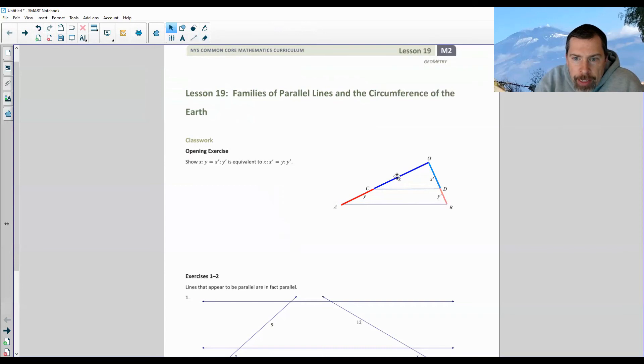So here's what we have for starters. We're trying to show that x is to y as x prime is to y prime, which is blue to red as blue to red, is equivalent to x is to x as y is to y, which would be blue to blue as red to red. Okay. So that's what we're trying to prove. We're trying to prove that it doesn't matter how we set up the proportion. So it says to show that these are equivalent. First thing we're going to do is write these proportions as fractions.